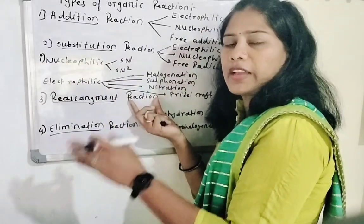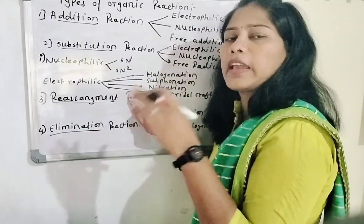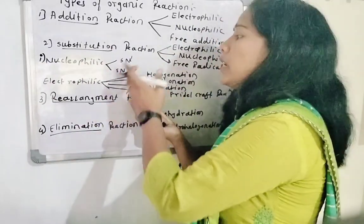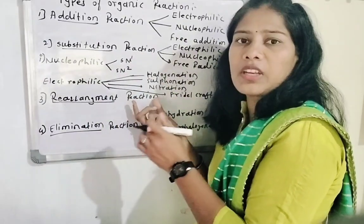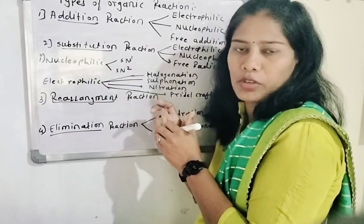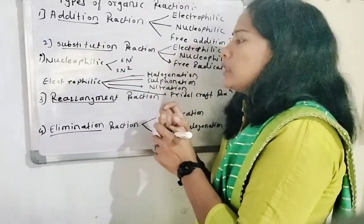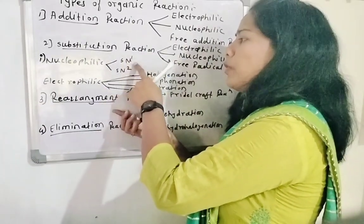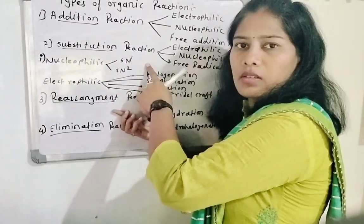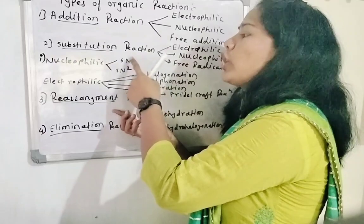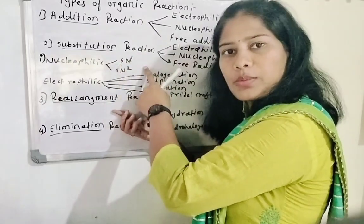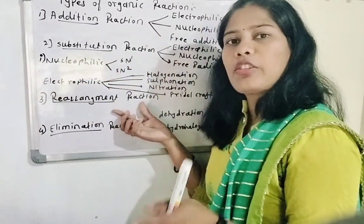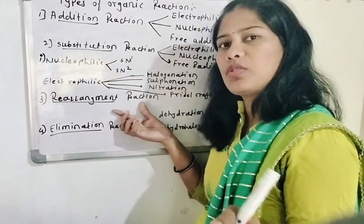Nucleophilic substitution reaction is studied in the 12th standard, covering alkyl halides and related lessons. There are two types: SN1 and SN2 reaction. SN1 is a unimolecular nucleophilic substitution reaction, and SN2 is a bimolecular nucleophilic substitution reaction.